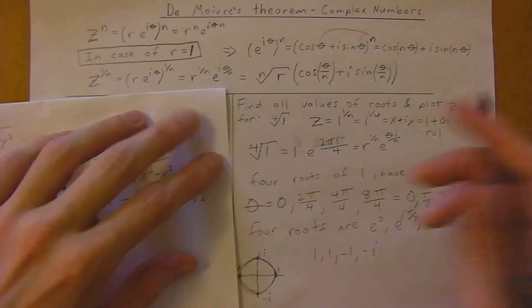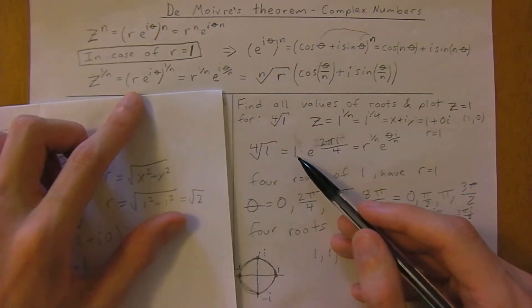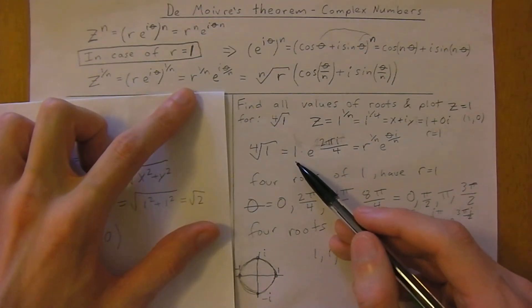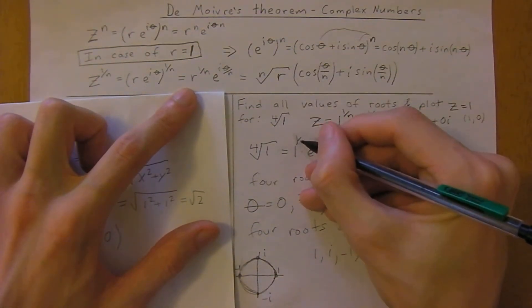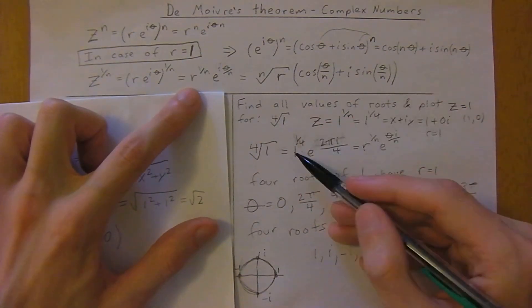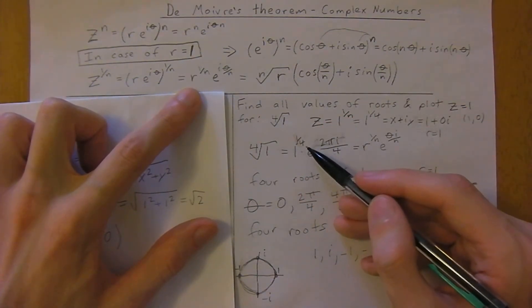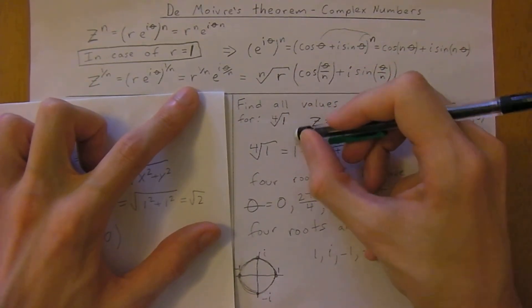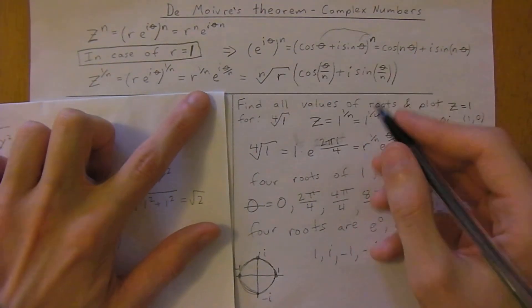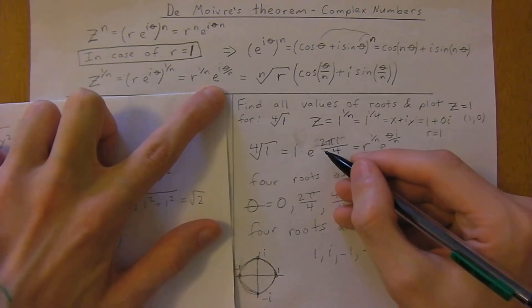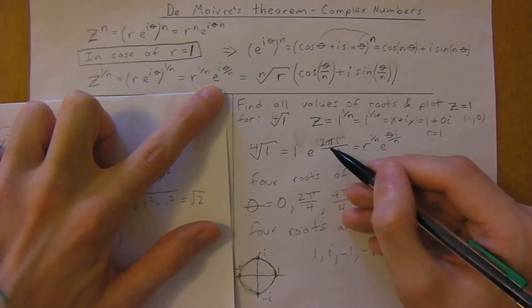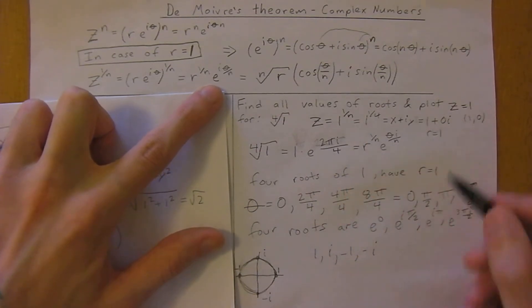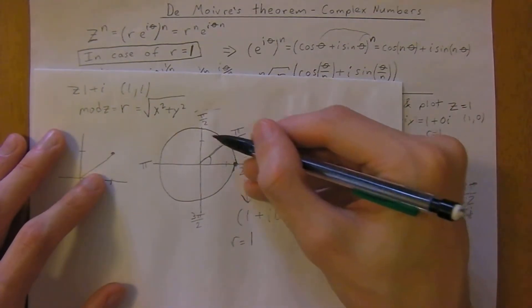We have our radius of 1, and this is going to be to the 1 over 4. But 1 to anything is still 1, so you don't even need to put that in there. Then we're going to have e to the 2 pi i divided by n. Theta, if you remember, you go around the circle once, you get 2 pi.